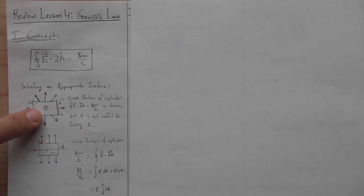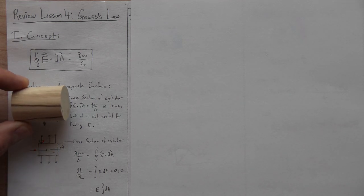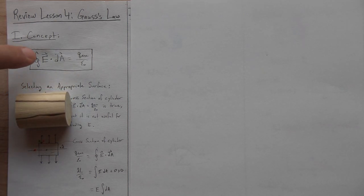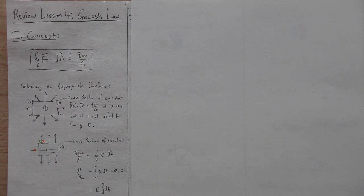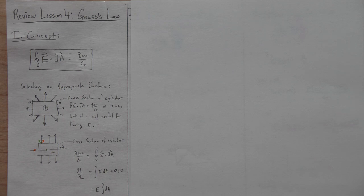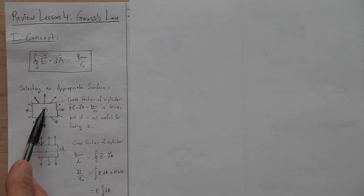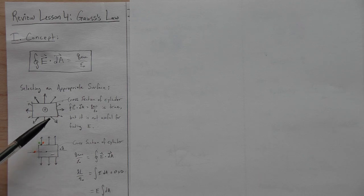Take a proton — electric field spreads away from it. If you enclose it in a cylinder, that statement is still true, but it doesn't give a convenient way to find the electric field. The field points away from the proton in all directions, so the dot product is different at all points and the field magnitudes differ by distance. The cylinder is not useful for a point charge, but is useful for a long line of charge, like a charged wire.